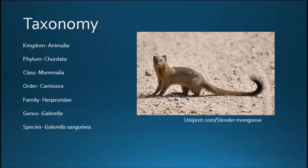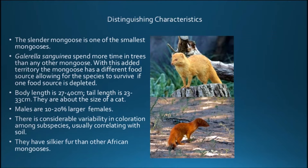The slender mongoose is one of the smallest mongooses. This particular species spends more time in trees than other mongooses. With this added territory, the mongoose has a different food source, which allows the species to survive if one primary food source is depleted.